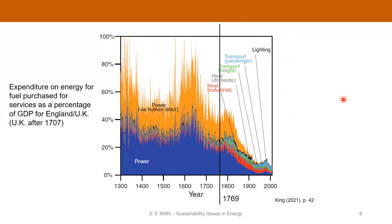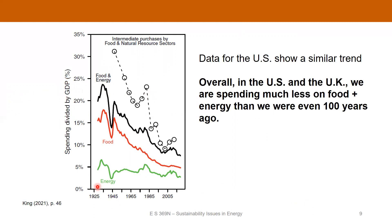We can look at similar data for the United States, going back to around 1926. This is spending as a percentage of GDP, covering both food and energy. You can see that the sum of food plus energy spending has gone down a lot — even over the course of the 20th to early 21st century. Energy costs have declined a little bit, and food costs have declined a lot. Overall, the US and the United Kingdom are spending much less on food and energy than even 100 years ago.